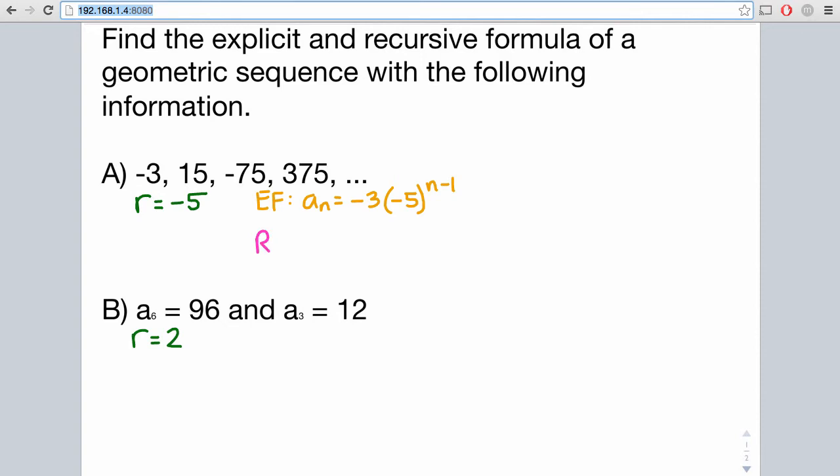For the recursive formula, again, two parts: you need to state your first term, which again is negative 3, and then the second part is a sub n equals your common ratio, which is negative 5, times a sub n minus 1.